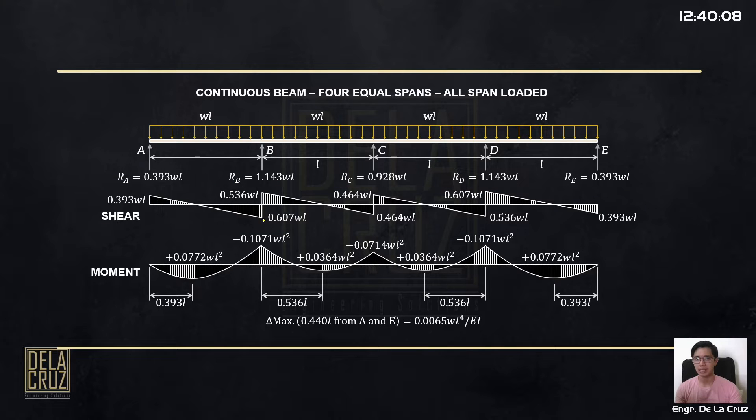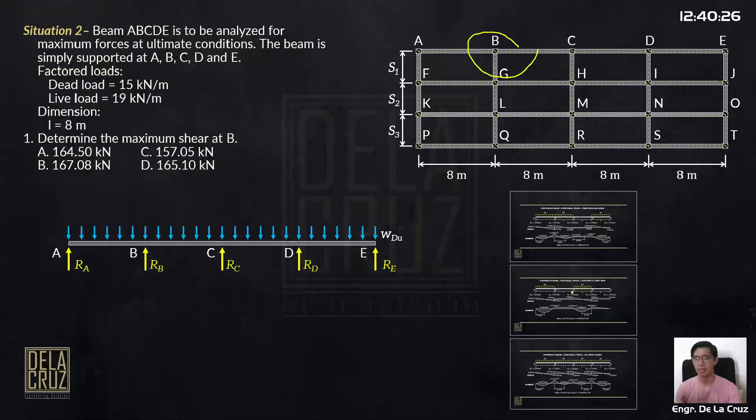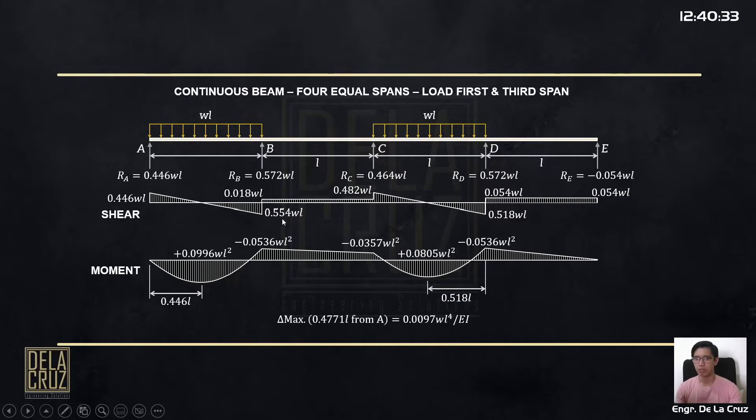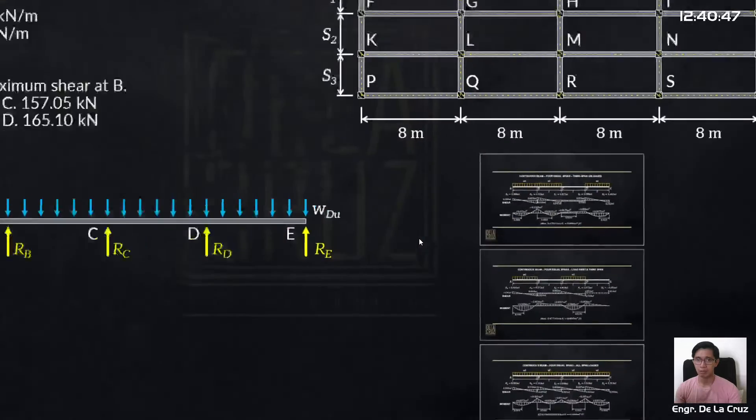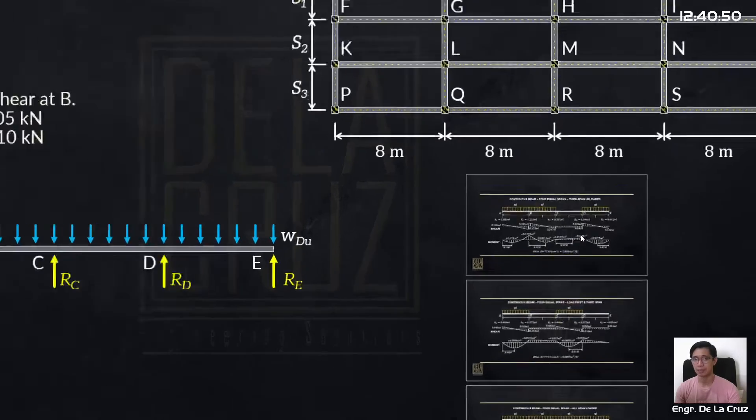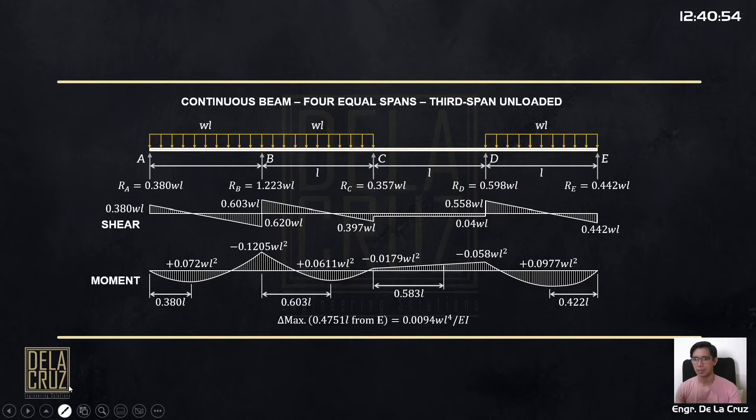What should be the load pattern of the live load? Isa-isahin natin. Pwede rin si live load present all throughout the span. So at B tayo. Tingnan natin yung ating shear diagram. You have here 0.607WL. Tingnan lang natin yung coefficient. So mas malaki siya compare dito, 0.536. So i-compare natin yan sa other diagram. This is 0.607WL.